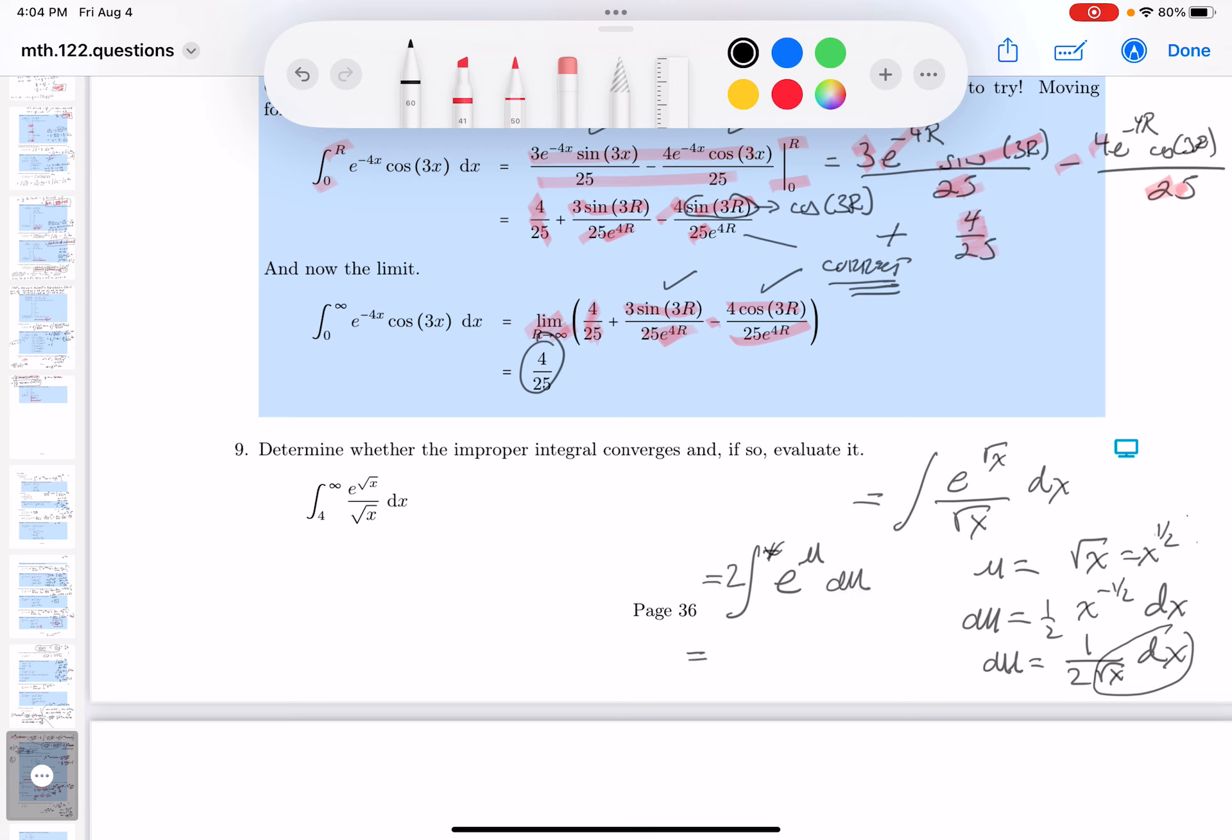2 e to the u. Well, if you remember, e to the u is just root x plus some constant of integration. So I'm going to claim that really wasn't bad.